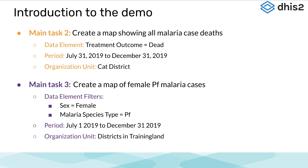The second task is to create a map showing locations of malaria deaths. We will use the data element treatment outcome and filter only those who have died. The period will be July 31st 2019 to December 31st 2019, and we will view these at the organization unit of CAT District.